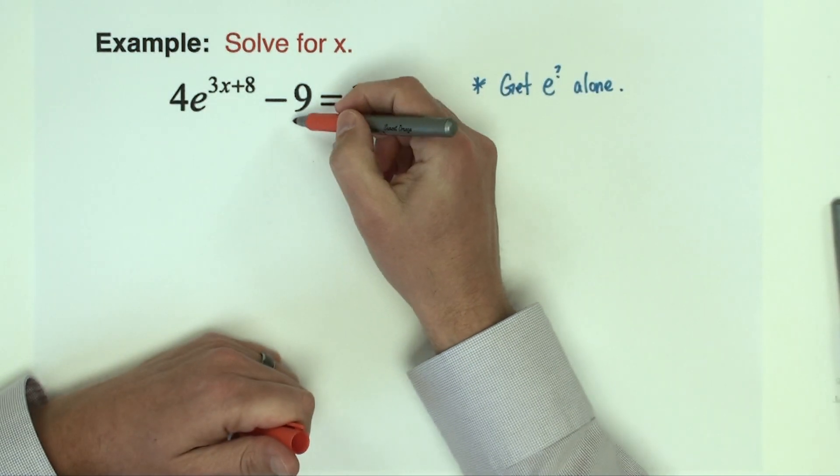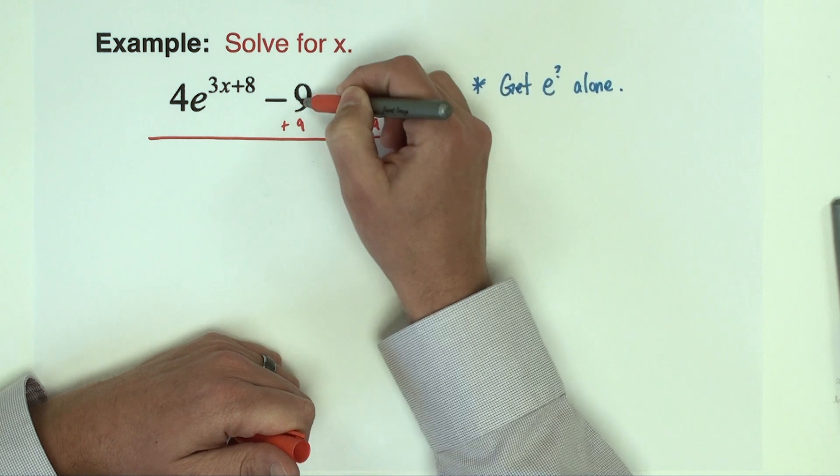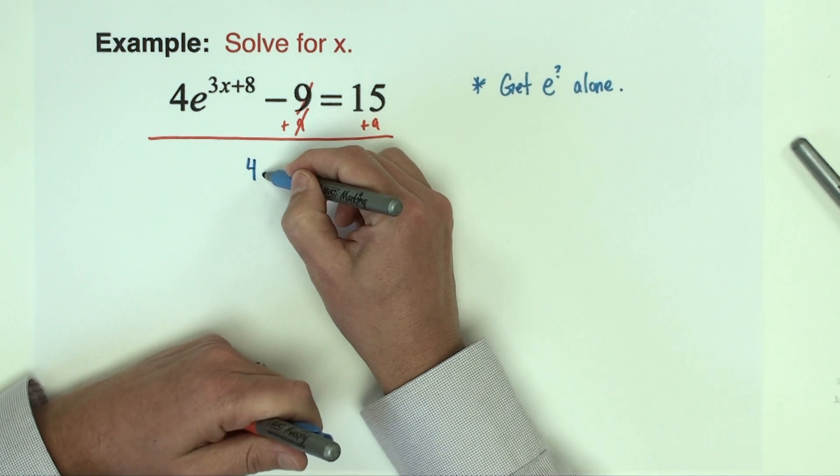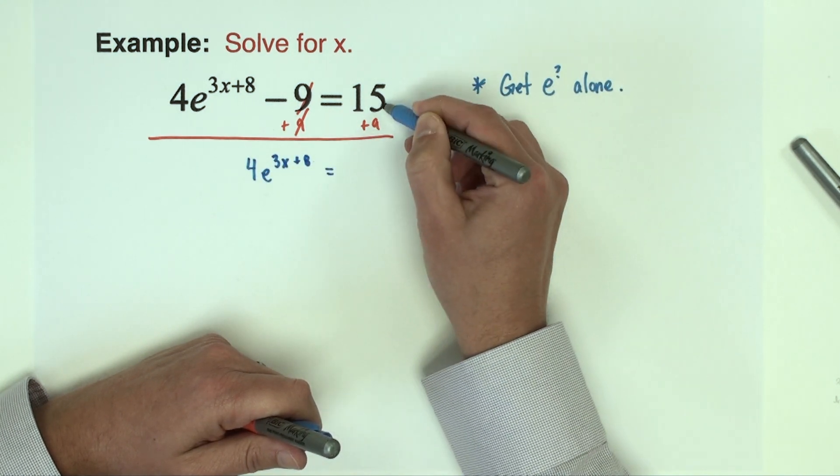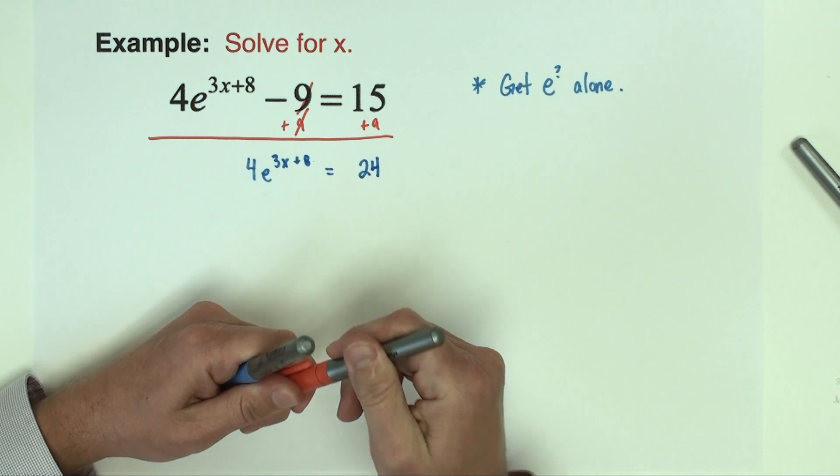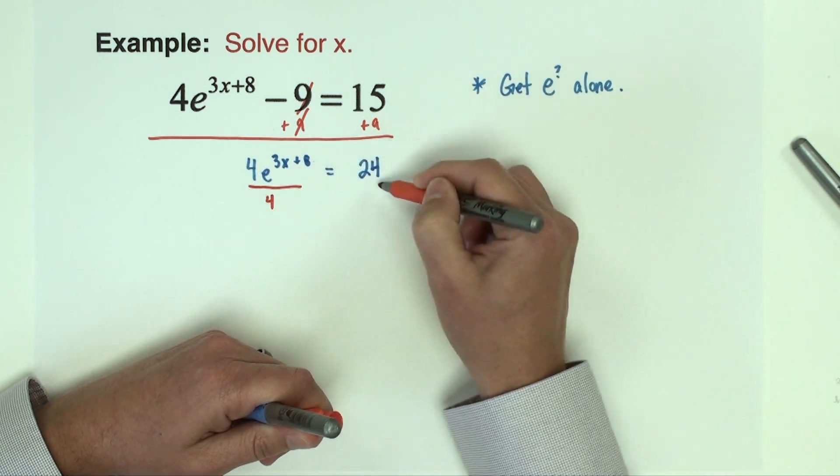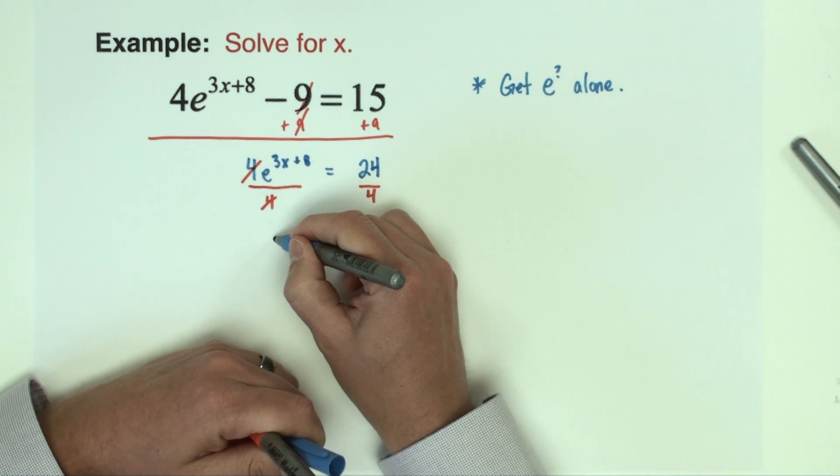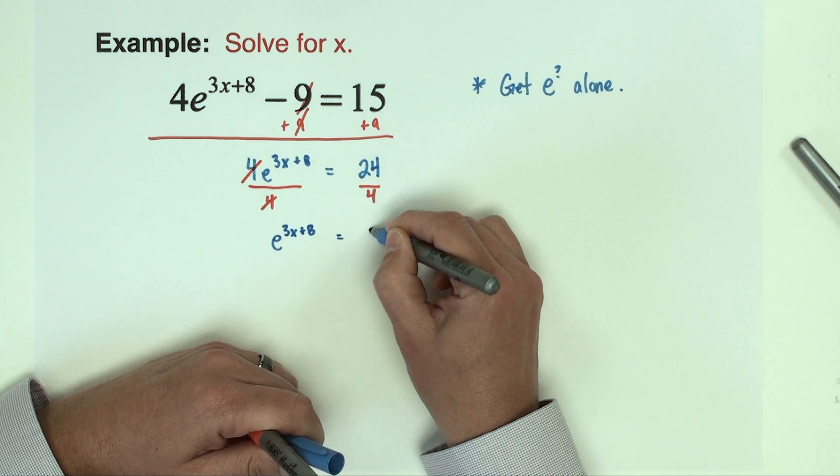Okay, so first step is going to be to take this nine and add nine to both sides, so doing that will give me 4e^(3x+8) equals 15 plus nine is 24. And then I'm going to remove the four that's in front of the e. We're going to divide both sides by four, and so now I have e^(3x+8) equals six.